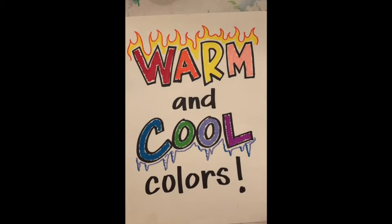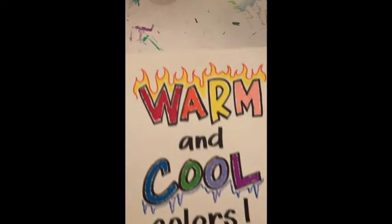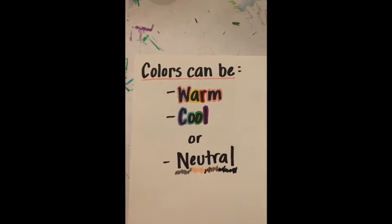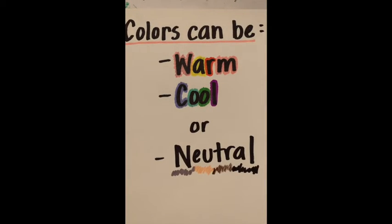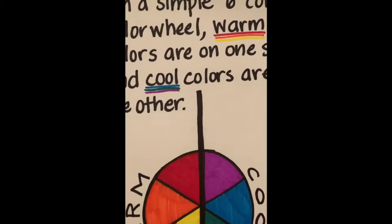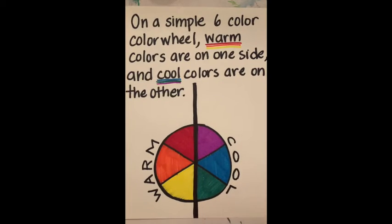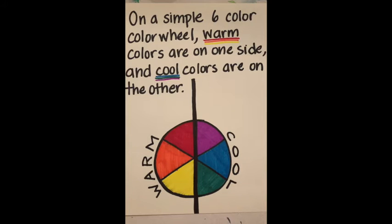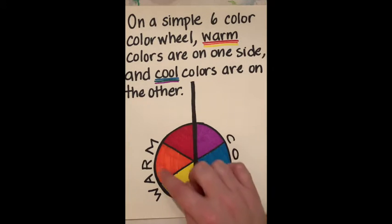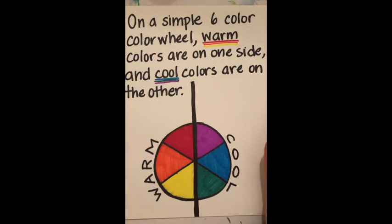Today we're going to be talking about warm and cool colors. Colors can be warm, cool, or neutral. On a simple six-color color wheel, warm colors are on one side and cool colors are on the other.